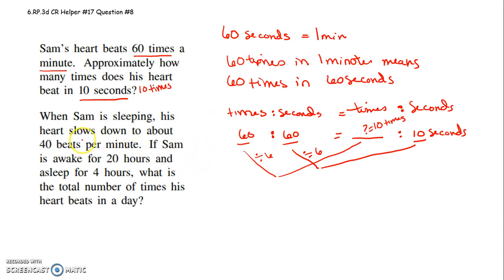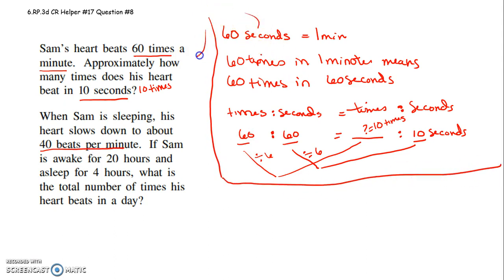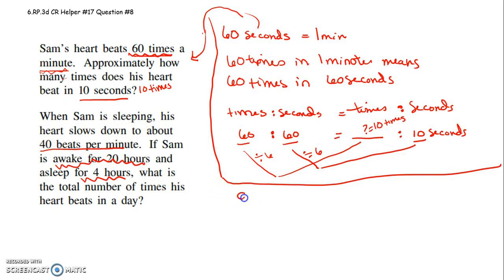When Sam is sleeping, his heart rate slows down to about 40 beats per minute. So that first part goes with the first question. Now for the second part: when he's sleeping, his heart rate slows down to about 40 beats per minute. If Sam is awake for 20 hours — when he's awake, it's 60 times per minute — and asleep for 4 hours, and when he's sleeping it's 40 beats per minute. What is the total number of times his heart beats in a day? Let's look at when he's awake.